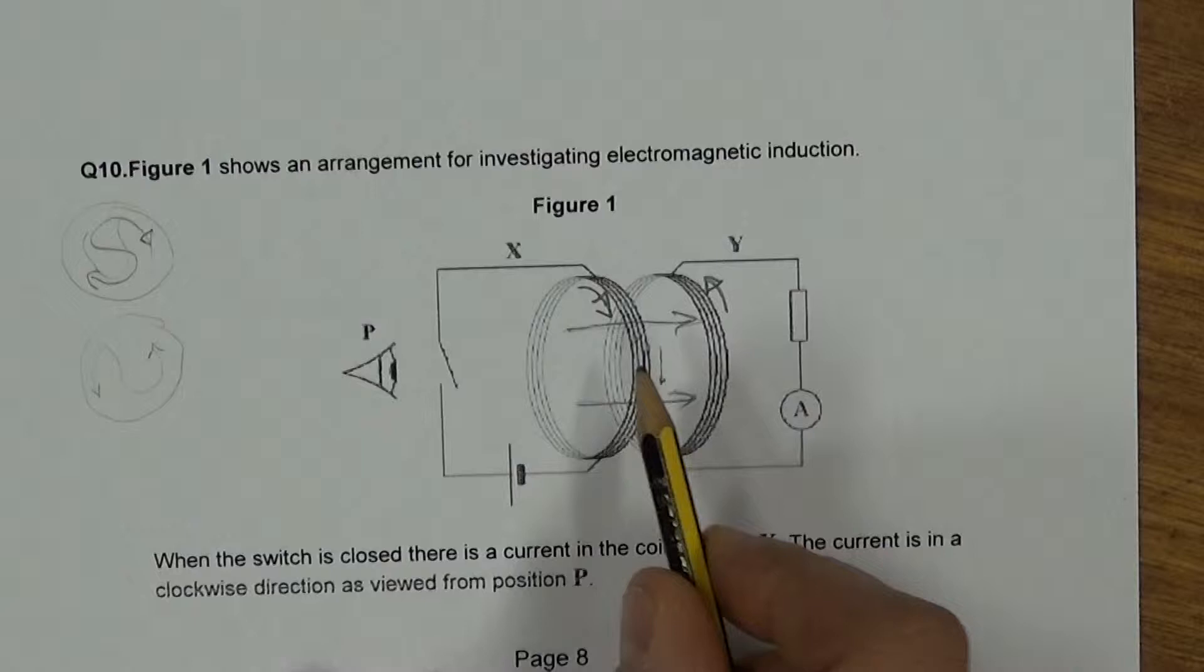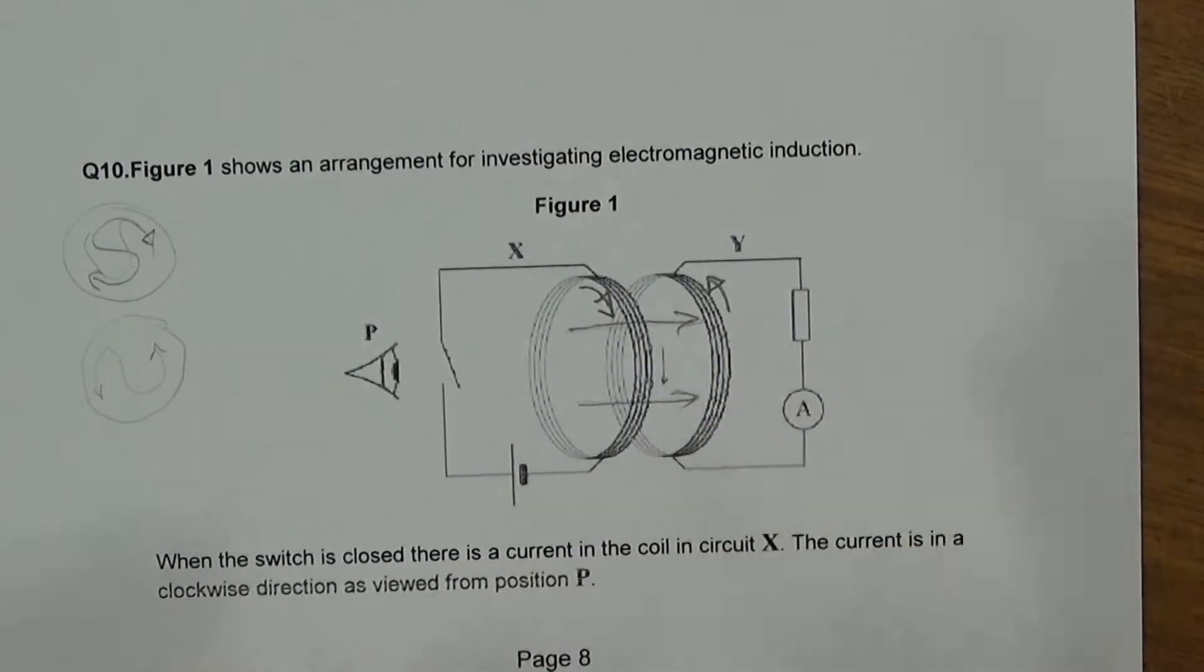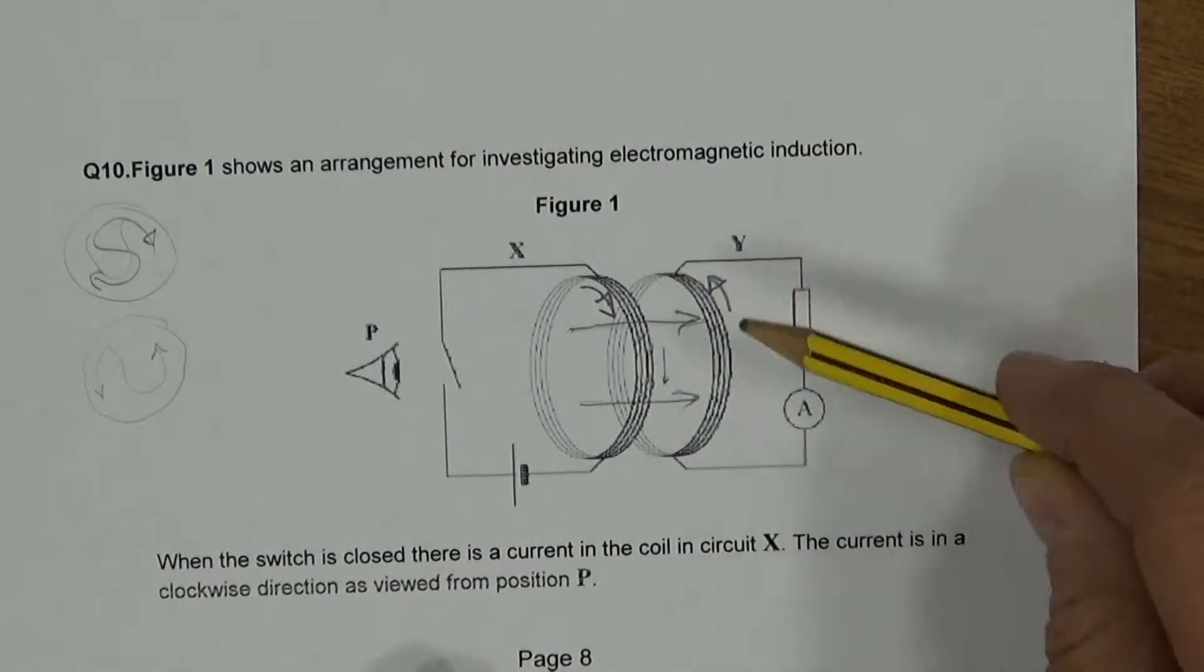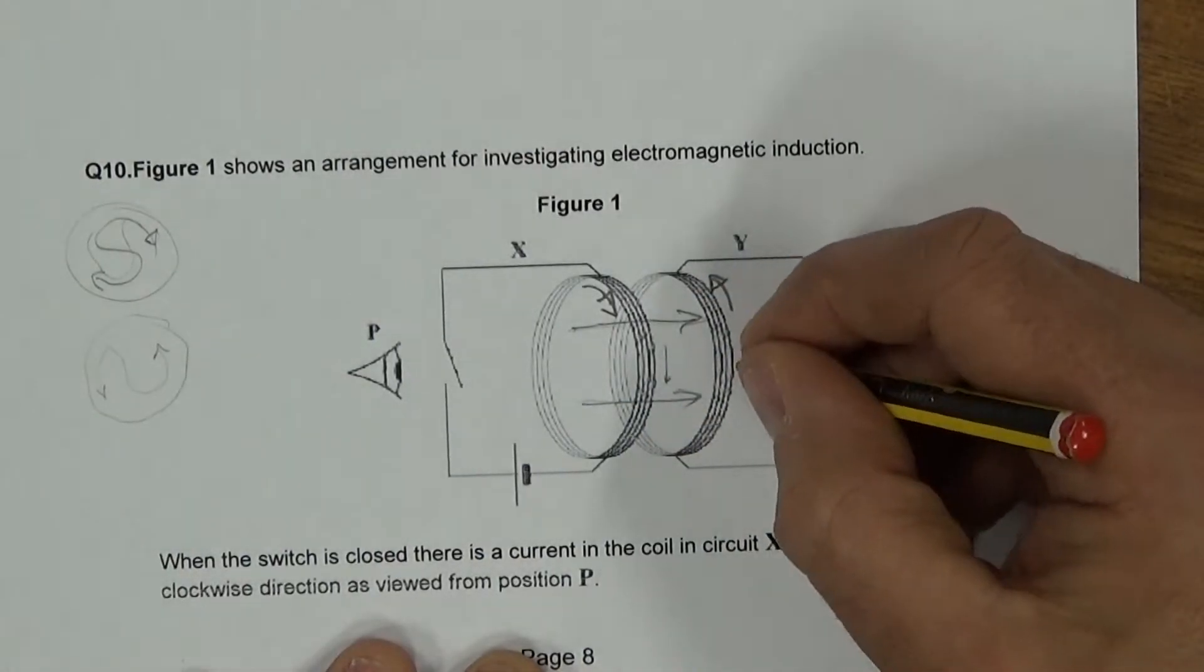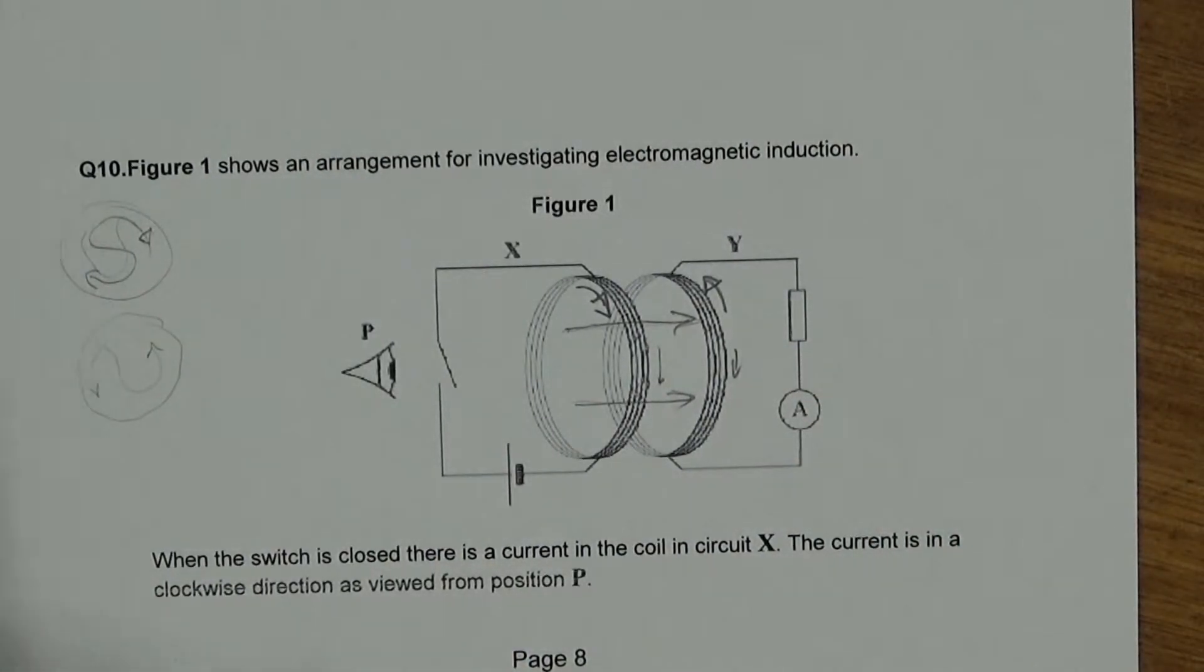So when the switch is open, these field lines are going to attempt to diminish. Because there's a changing flux to this, this is going to oppose the change that's causing it. So the current is going to switch to try and keep these field lines present as long as possible. So that's how that one will work.